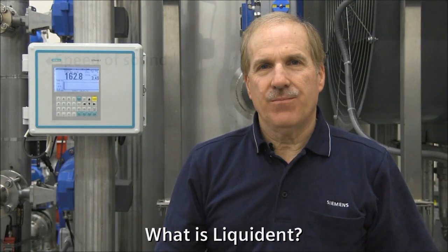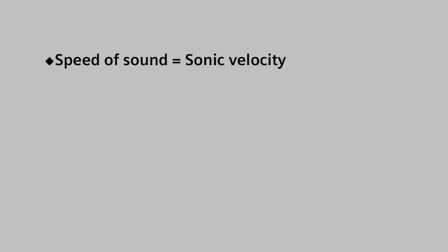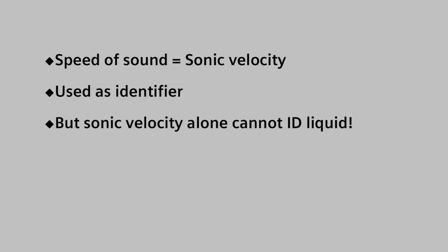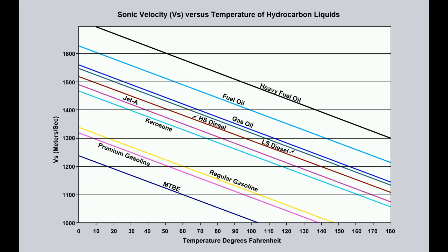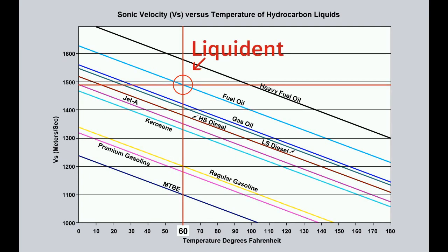What is liquident? The speed of sound, also known as the sonic velocity, of a hydrocarbon liquid is used as an identifier. But sonic velocity alone cannot identify a liquid because sonic velocity changes with temperature. Therefore, an individual value could correspond to multiple liquids. By correcting the actual sonic velocity to a reference temperature — for example, 60 degrees Fahrenheit — the meter can positively identify the liquid. This is possible because sonic velocity changes linearly with temperature. This normalized sonic velocity value is called liquident.